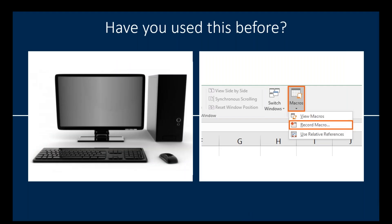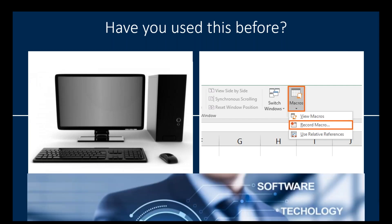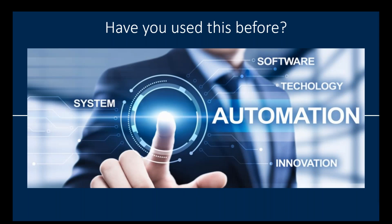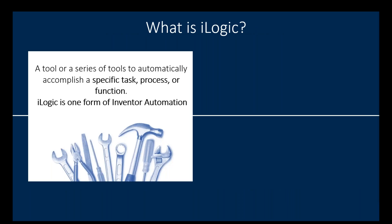Some background on iLogic: for the most part, people who use any desktop application understand what automation is. If you've used Microsoft Excel, you may have heard of macros — tools developed within Excel to accomplish a specific task. Inventor automation is very much the same — it is a tool or series of tools that automatically accomplish a specific task, process, or function. iLogic is one form of Inventor automation.